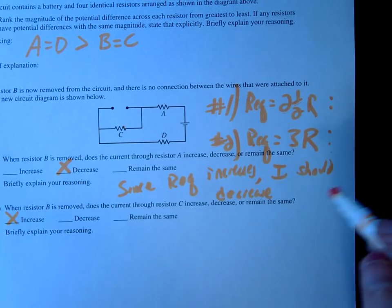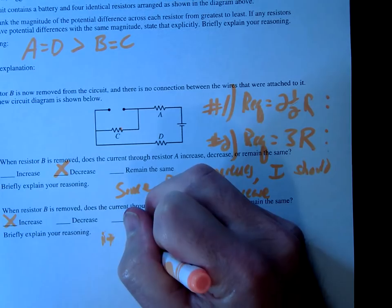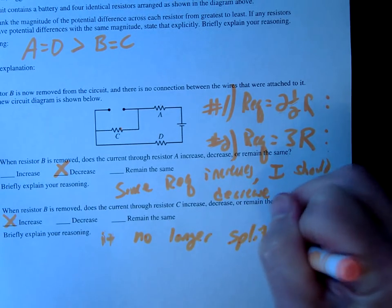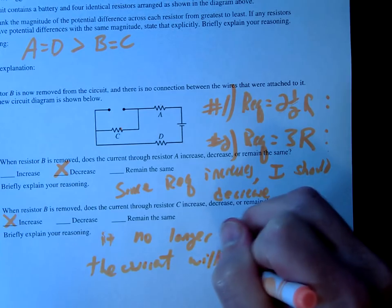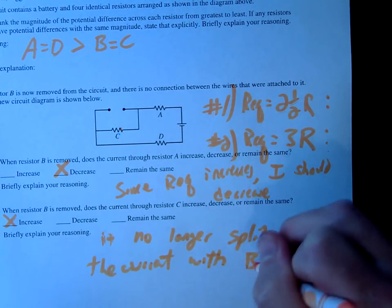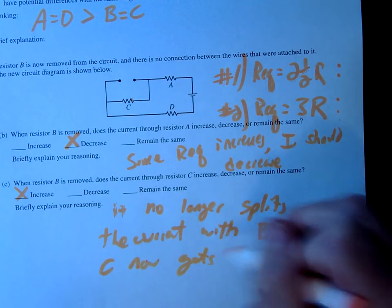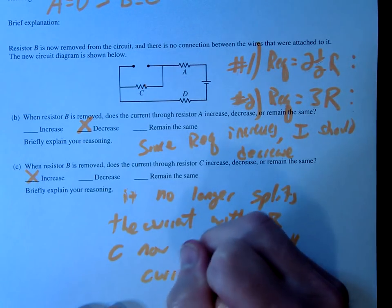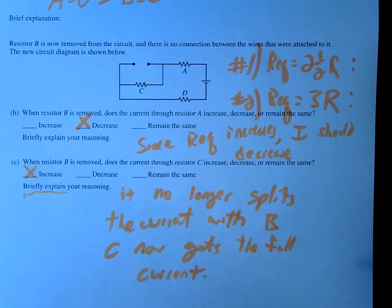Okay, so our reasoning would be it increases because it no longer, the circuit no longer splits the current with B. In other words, C now gets the full current. Now you could prove this mathematically. I don't believe they're asking you to do this. They're just saying to briefly explain. So this should be sufficient. All right, that's question number four.